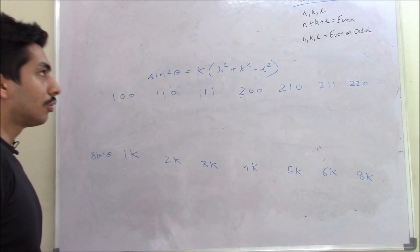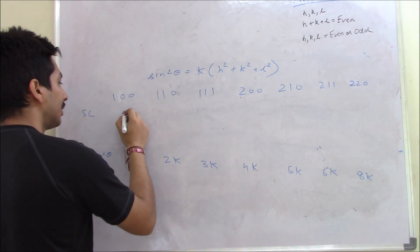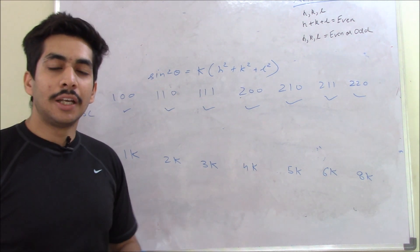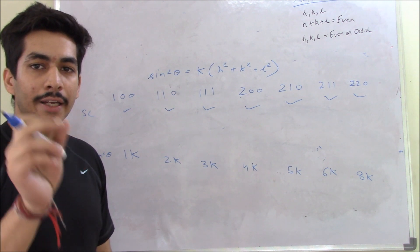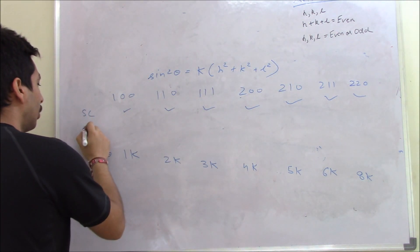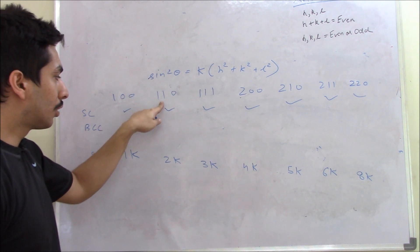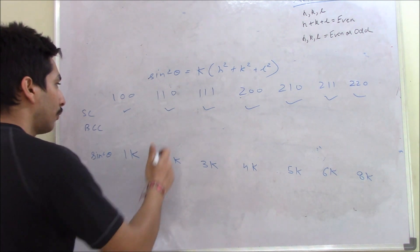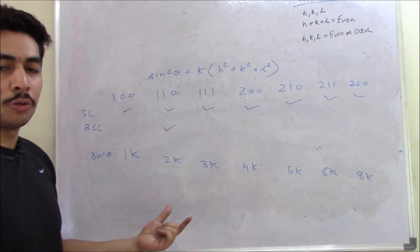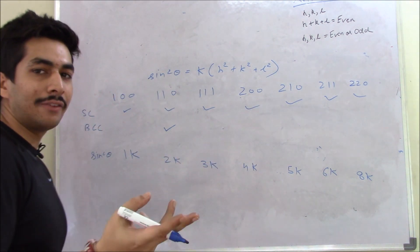For simple cubic, the diffraction lines will be observed at all points — 1K, 2K, 3K, 4K, 5K, 6K, 8K. So if you see a line in the XRD pattern at all these points, the crystal is simple cubic. For body-centered cubic, the sum of all three Miller indices (h+k+l) must be even. For (1,0,0) the sum is 1 — odd, so no line. For (1,1,0) sum is 2 — even, so a line is observed at 2K.